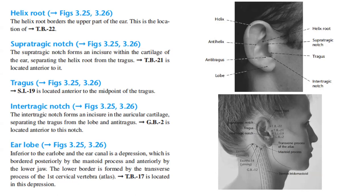The tragus is where SI19 is located, anterior to the midpoint of the tragus. The intertragic notch forms an incisure in the auricular cartilage, separating the tragus from the lobe and the anti-tragus. GB2 is located anterior to this notch.